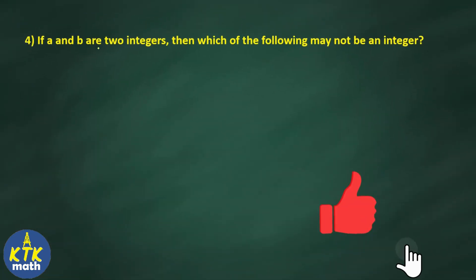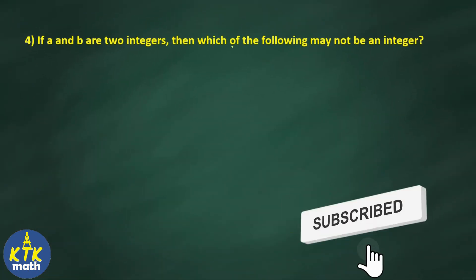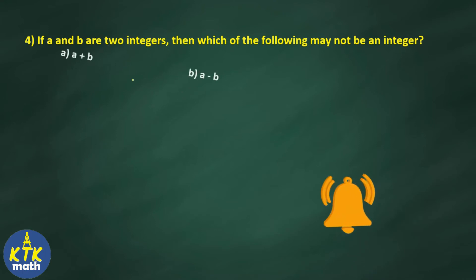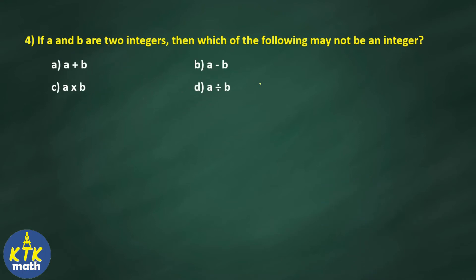Question number 4: if A and B are two integers, which of the following may NOT be an integer? The options are A plus B, A minus B, A multiplied by B, A divided by B. When adding two integers the answer is also an integer. When subtracting two integers the result is also always an integer.